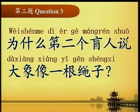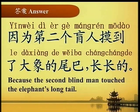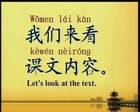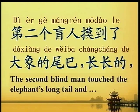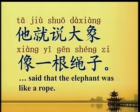为什么第二个盲人说大象像一根绳子？ Why did the second blind man say the elephant was like a rope? 答案：因为第二个盲人摸到了大象的尾巴，长长的。 Because the second blind man touched the elephant's long tail. 我们来看课文内容：第二个盲人摸到了大象的尾巴，长长的，她就说大象像一根绳子。 The second blind man touched the elephant's long tail and said that the elephant was like a rope.